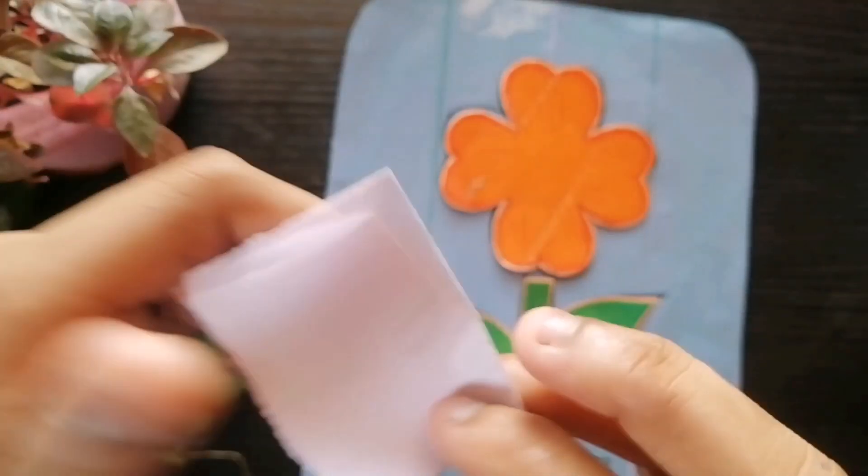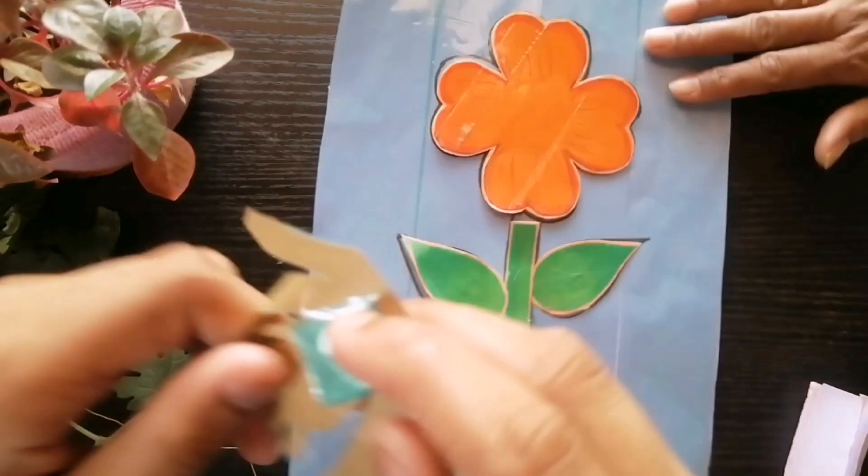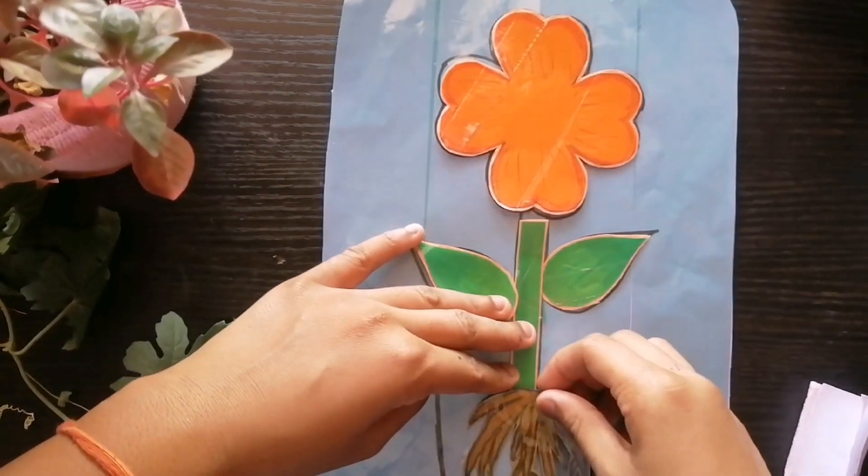Roots absorb water and minerals from the soil and hold the plant so it does not fall over.